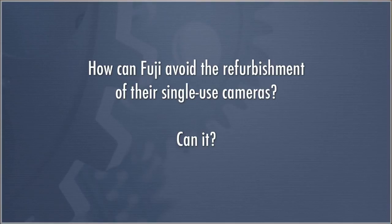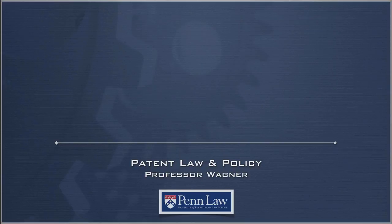So how can Fuji avoid the refurbishment of their single-use cameras? It could make it much more difficult to disassemble the product — make it so you effectively had to destroy the product to remove the film. It could also patent a process of creating or building the product, which might ensnare companies like Jazz Photo. But in general, under Jazz Photo, it's going to be relatively hard for Fuji to prevent people refurbishing these single-use cameras. Indeed, if you go into many stores now, you can find refurbished, significantly less expensive disposable cameras on sale. And that's it for Lecture 17.